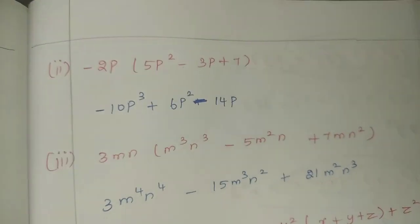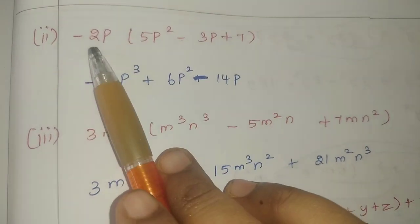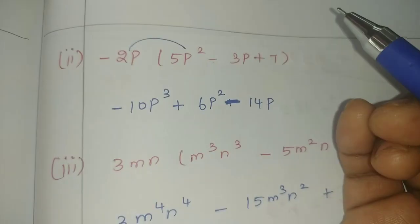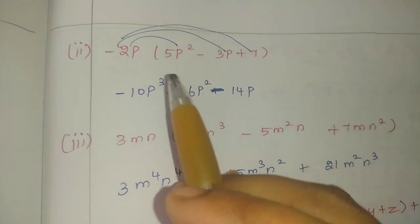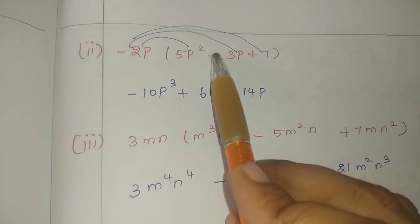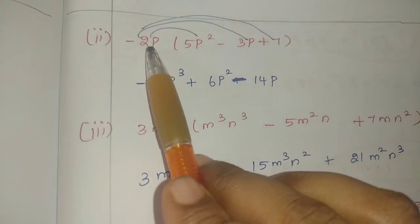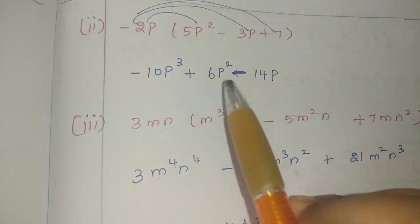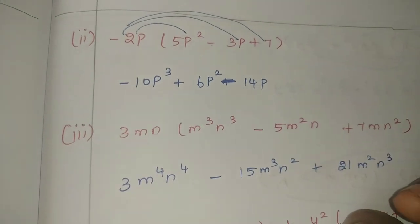Now expand minus 2p into (5p square minus 3p plus 7). We multiply minus 2p into each term. First: 2 times 5 is 10, minus into plus is minus, p power 1 plus square gives p cubed — so minus 10p cubed. Next: 2 times 3 is 6, minus into minus is plus, p power 1 plus 1 is p square — so plus 6p square. Finally: minus into plus is minus, 7 times 2 is 14, giving minus 14p.